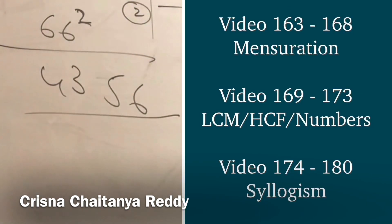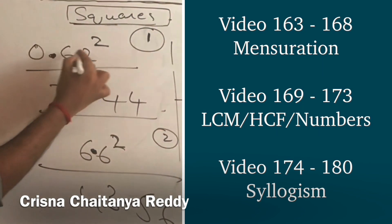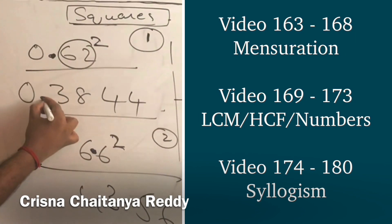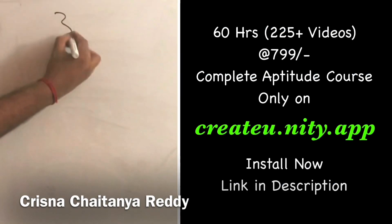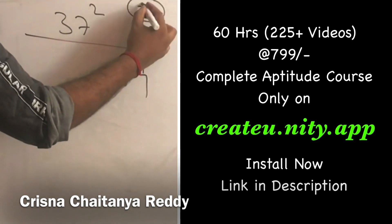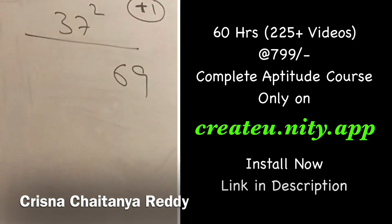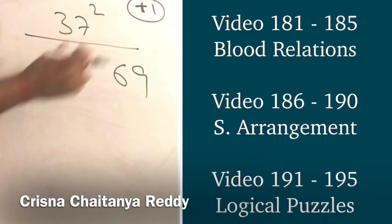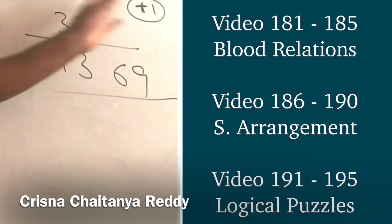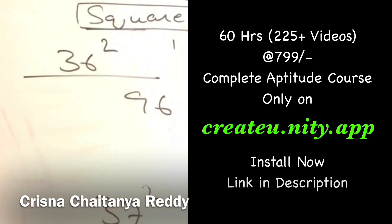For decimal cases: if the question is 6.6 squared, since there is one digit after the decimal, there will be two after in the answer - so 43.56. If it was 0.62 squared, four digits after decimal: 0.3844. For 37 squared: 13 less than 50, 13 squared is 169 - write 69, carry is plus 1 (not minus). 25 minus 13 is 12, plus 1 carry is 13. Answer: 1369.